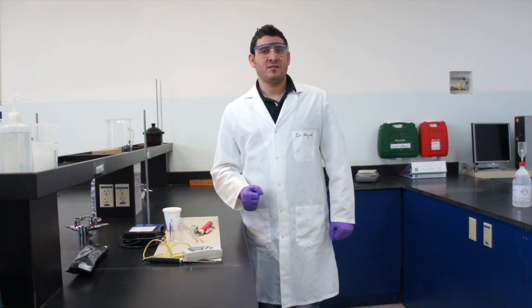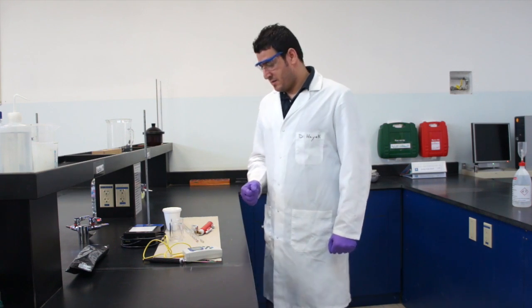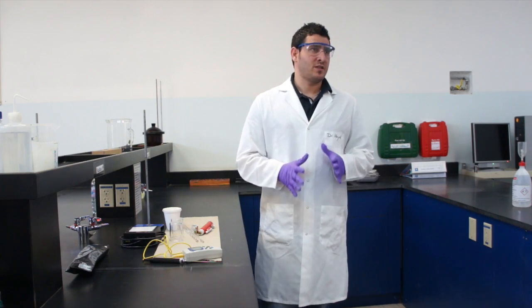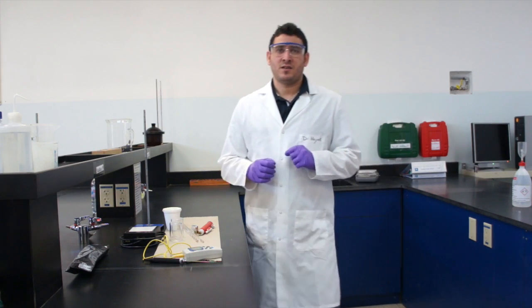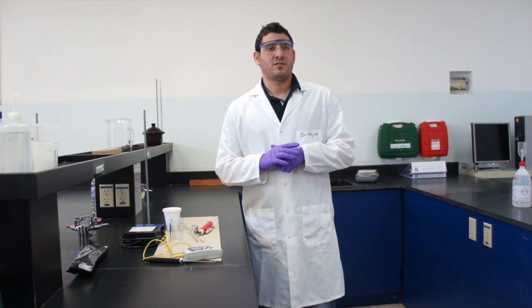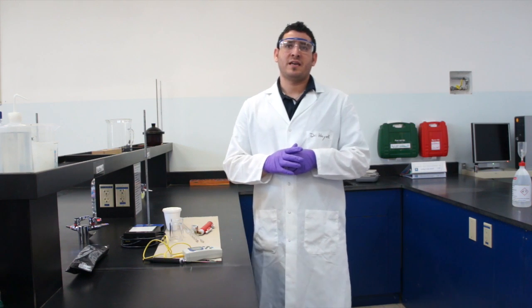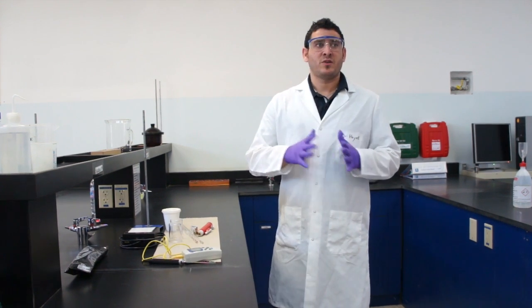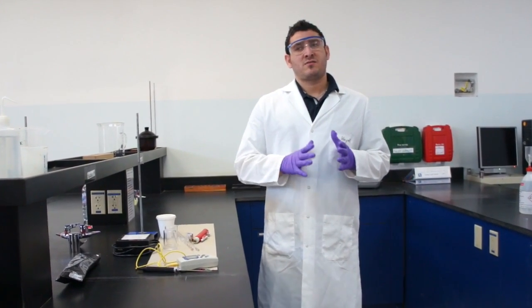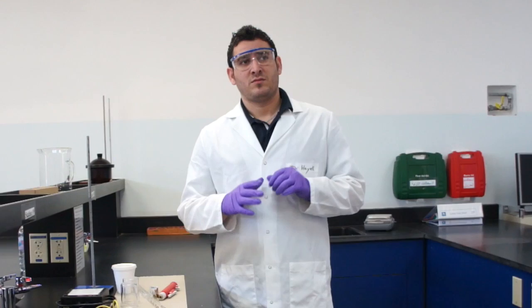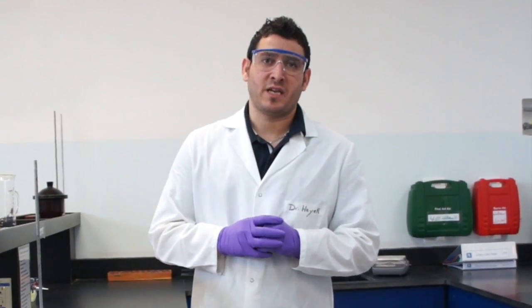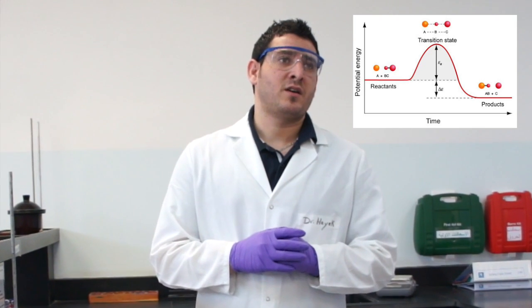This is experiment 17, where we will study the heat of neutralization. You've seen in chapter 17 you can calculate the heat, and from the heat you can calculate the enthalpy. Now the enthalpy of the reaction, today's reaction is an acid-base reaction which is called neutralization. Neutralization reactions are always exothermic.